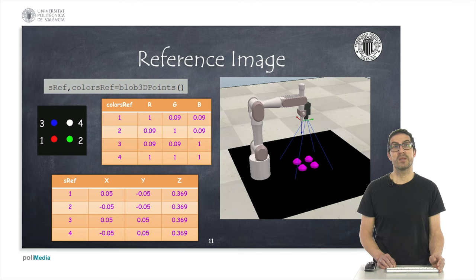If you call Blobs3DPoints function inside the syscallSensing function, and print the values of the variables sref and colorsref, they should have approximately the values that I show here in these tables. These values will be considered as reference values when implementing robot visual servoing.